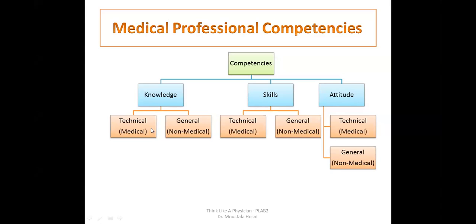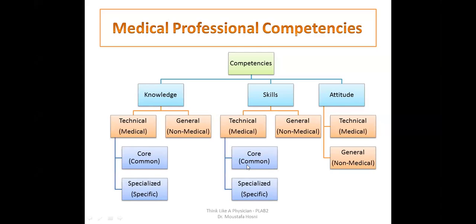We can subclassify the medical categories for both skills and knowledge to be core or common, and specialized knowledge and skills. For the junior level, you're always asked to show that you have the core knowledge and core skills based on some guidelines distributed by the GMC. For the PLAB-2 exam, you are tested as a junior doctor. You are required to show that you have the core knowledge, core skills, and the right attitudes. You should avoid showing specialized knowledge, even if you have it, because for the purpose of the exam, you're a junior doctor, and going beyond your level of authority is considered wrong for the exam and for the job.